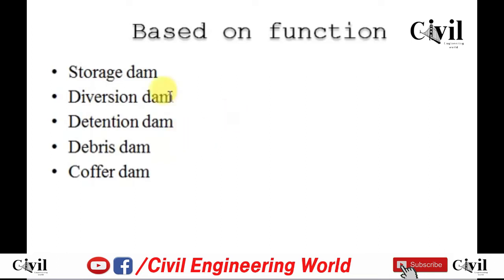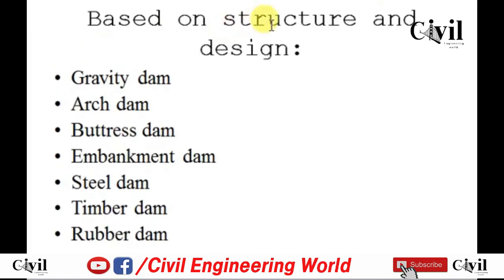A debris dam is constructed in those places where there is a risk of big stones and debris coming into the downstream during high flood and rainy seasons. A coffer dam is built in those places where any type of construction is ongoing nearby. Based on structure and design,